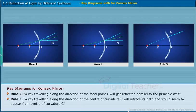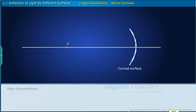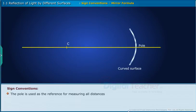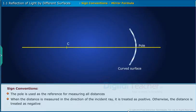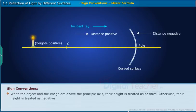After learning to draw ray diagrams, let us derive the relationship between object distance U and image distance V. Sign conventions used in this derivation: the pole is used as the reference for measuring all distances. When the distance is measured in the direction of the incident ray, it is treated as positive; otherwise, the distance is treated as negative. When the object and the image are above the principal axis, their height is treated as positive; otherwise, their height is treated as negative.